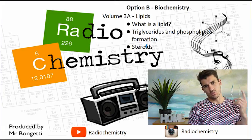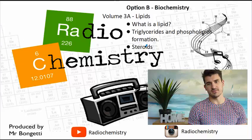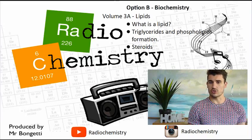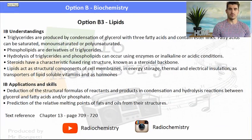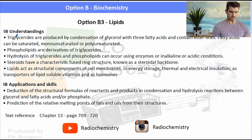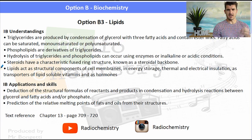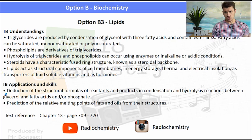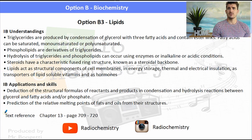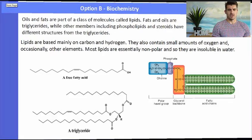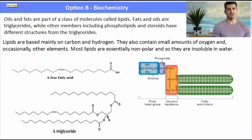Volume 3A lipids. We discuss what is a lipid, we look at triglyceride and phospholipid formation, and then we have a discussion on steroids. Option B3 on lipids — there are a number of IB understandings and applications. Just make sure you have a read through them, understand what you need to know, and then we'll focus on the applications and skills.